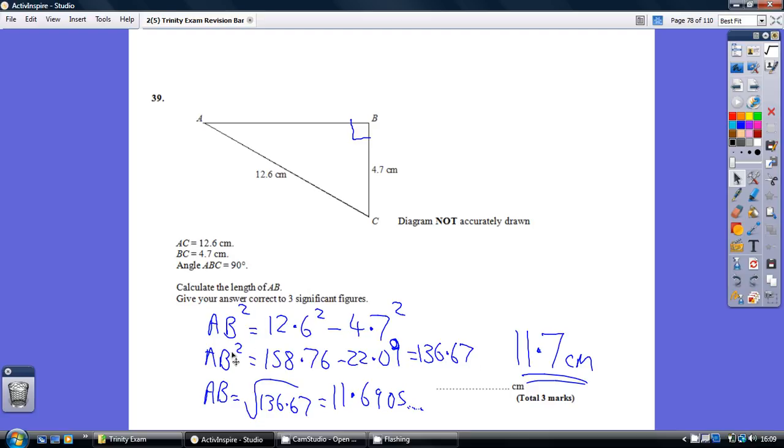Now to undo the squaring, again, we square root. So AB is the square root of 136.67, which rounds to 11.7 to 3 sig figs.